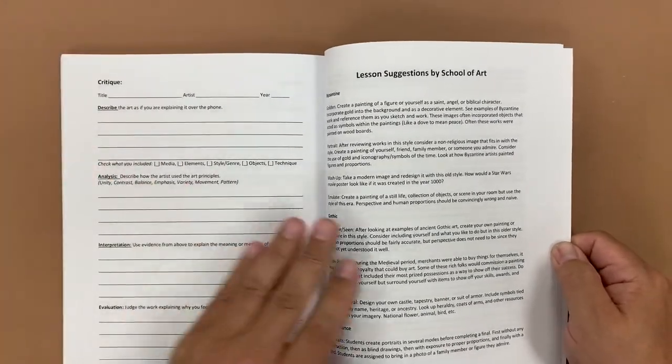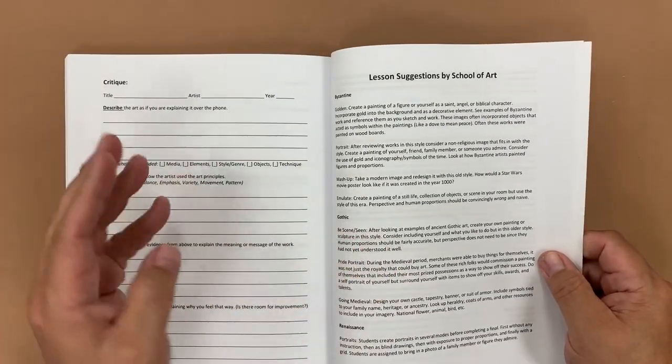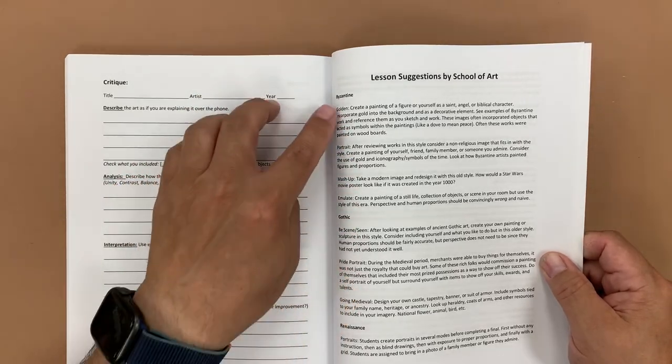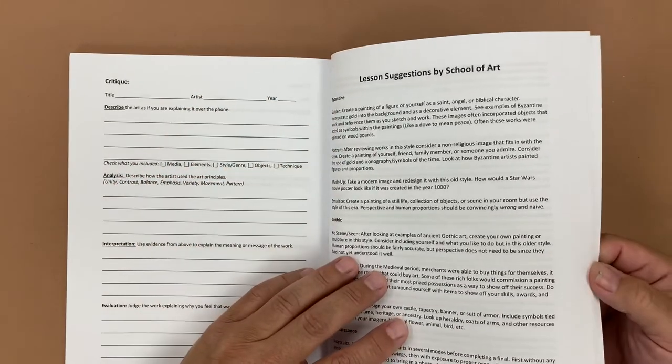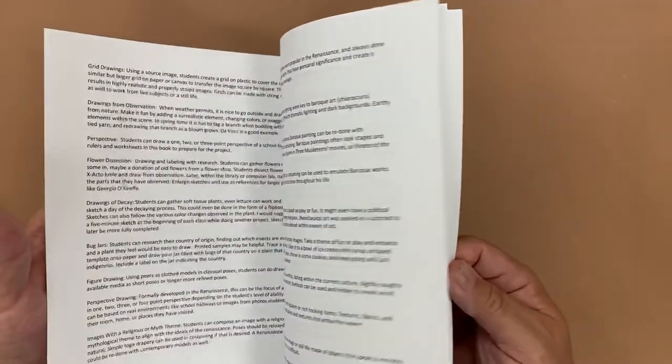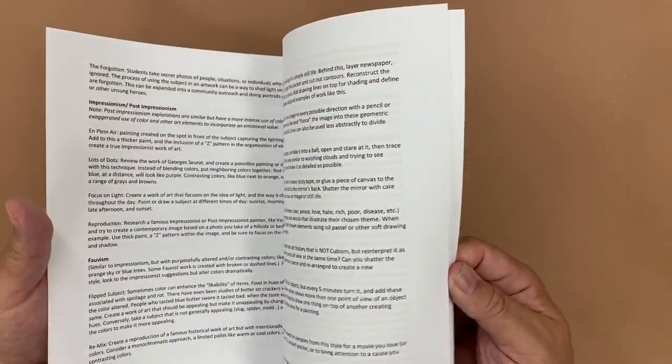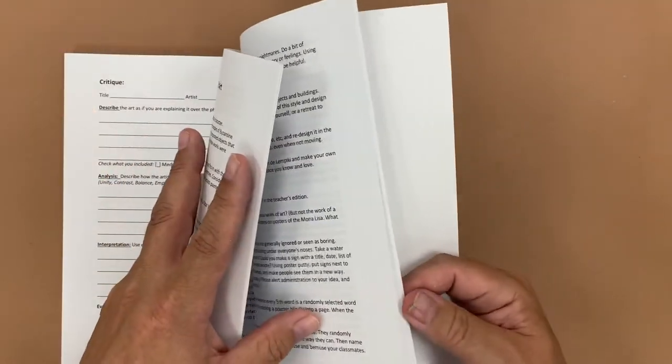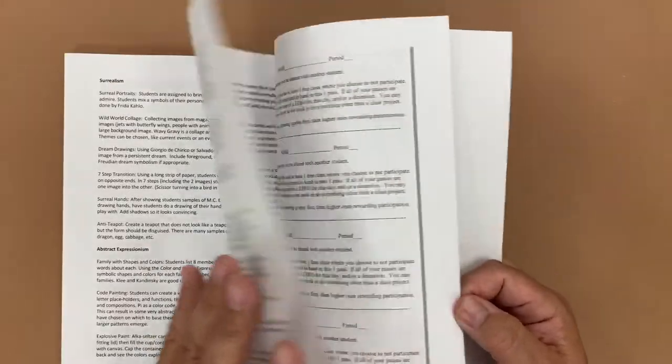Then we have full lesson suggestions. So in the beginning where we had thumbnails, these go into a little bit more description. Again, these are by major movements in art from Byzantine through pop art. So students can, what I have them do is actually go through and put stars next to the ones that they feel are kind of interesting and they might want to explore through the year.